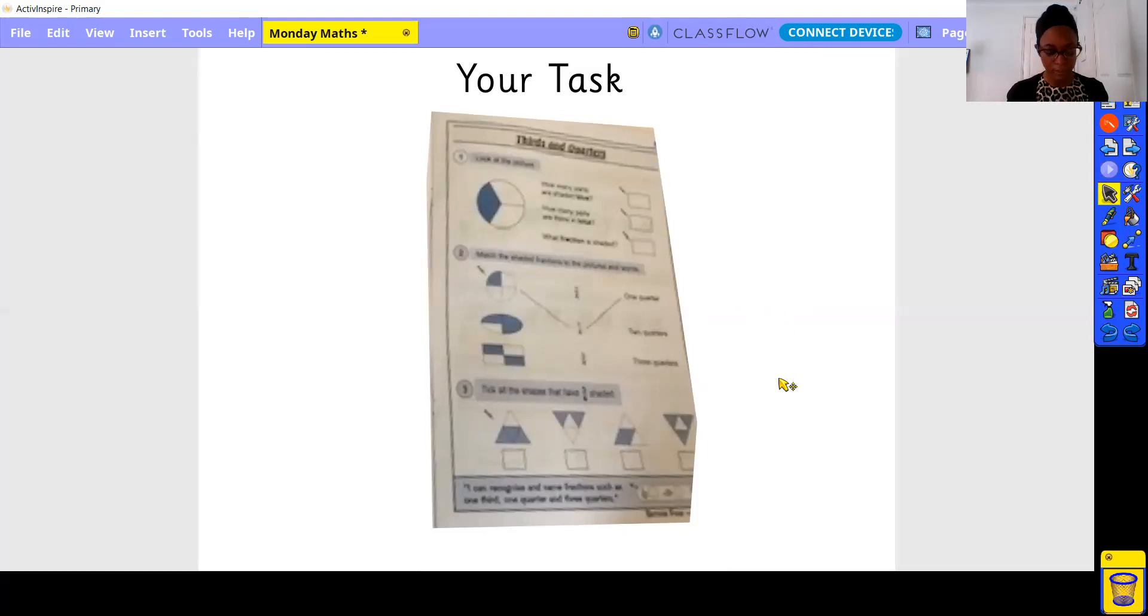And finally, tick all the shapes that have three quarters shaded. Three out of the four shaded. Give that a go. Feel free to pause it here and then move on for the answers.